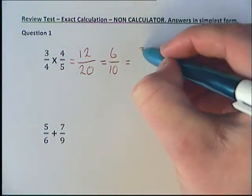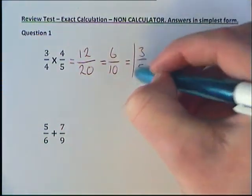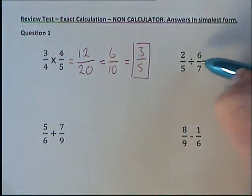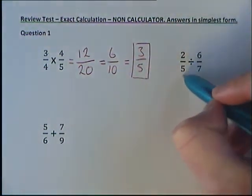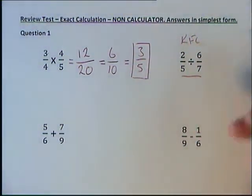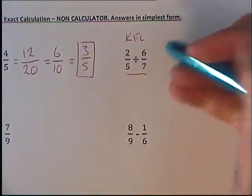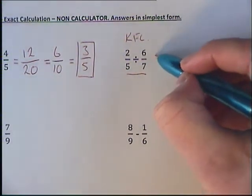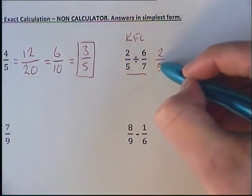6 over 10. Divide by 2 again to get 3 over 5. Then we've got our dividing fractions, so hopefully you remembered our KFC method. We're going to keep the first fraction the same, so we've got 2 over 5.